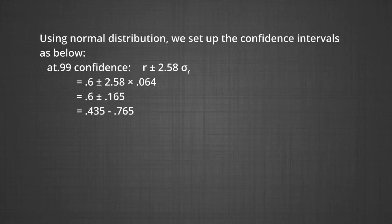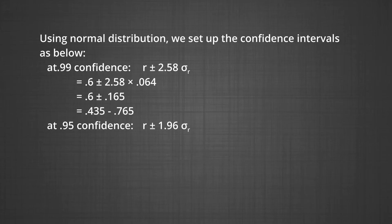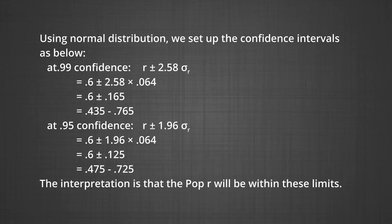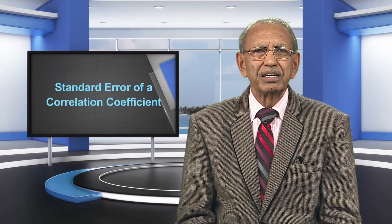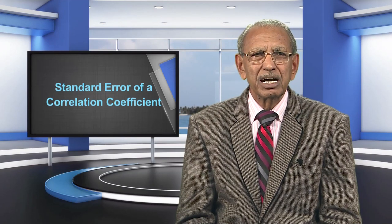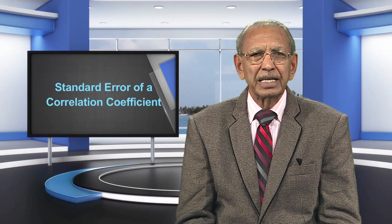For the 0.95 confidence interval: r plus or minus 1.96 times sigma-r equals 0.6 plus or minus 1.96 times 0.064, arriving at 0.475 to 0.725. The interpretation is that the population r will be within these limits. However, this formula has a fundamental defect: the normal distribution is not a good fit to the sampling distribution of r's, as explained earlier. Hence, Z-transformation of r is recommended.